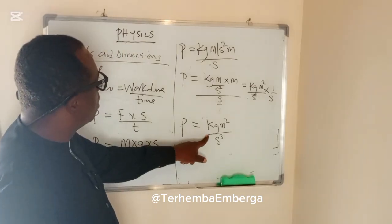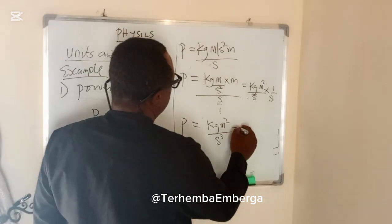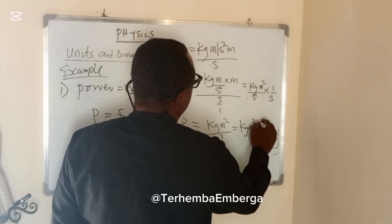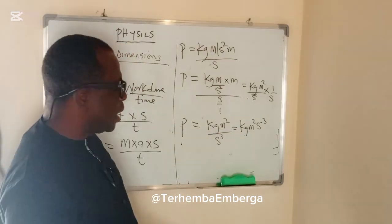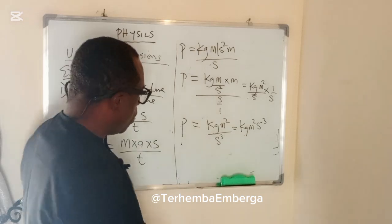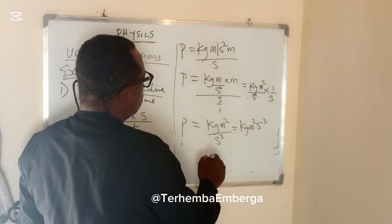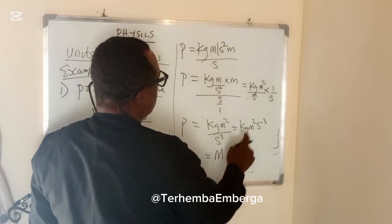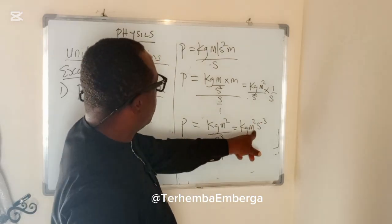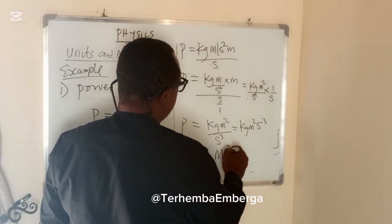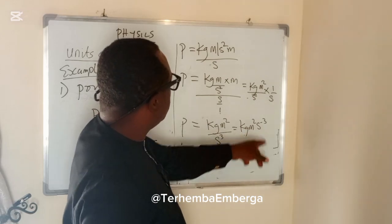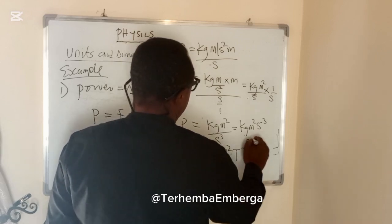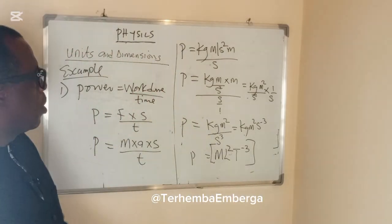Which we can write as P equal to kg·m² over s³. That is the unit of power, which can be expressed as kg·m²·s⁻³. The dimension of mass is M, the dimension of meter is L — that becomes L squared — and the dimension of time is T, that is T raised to power minus 3. That is the dimension of power: M·L²·T⁻³.